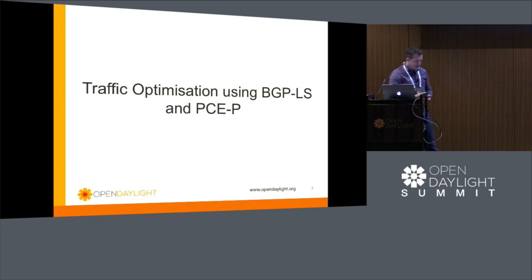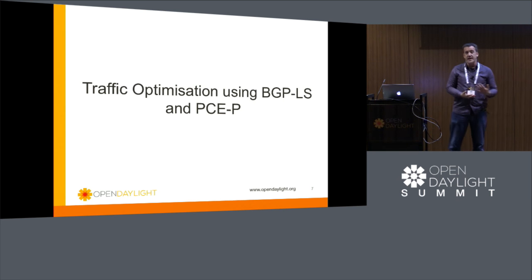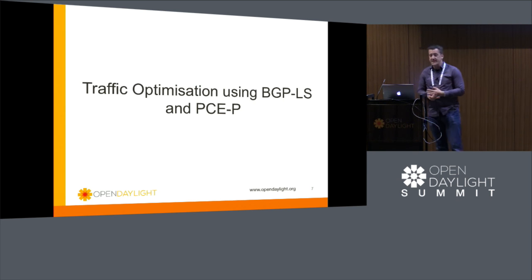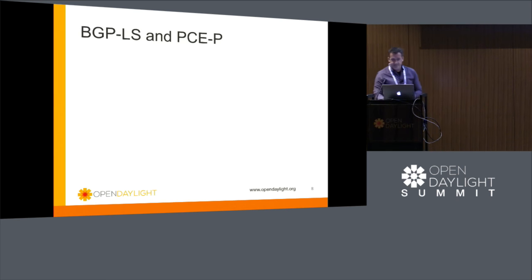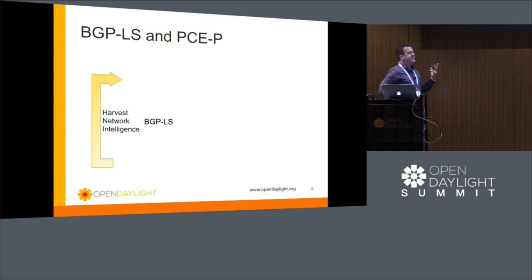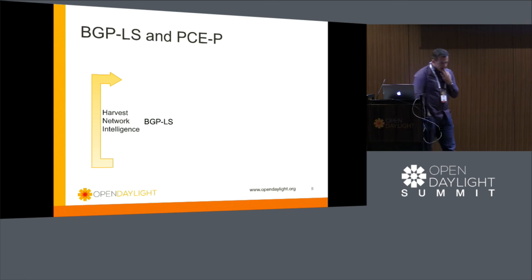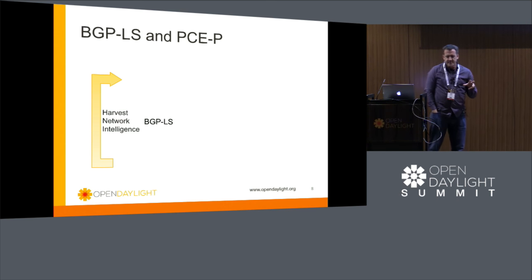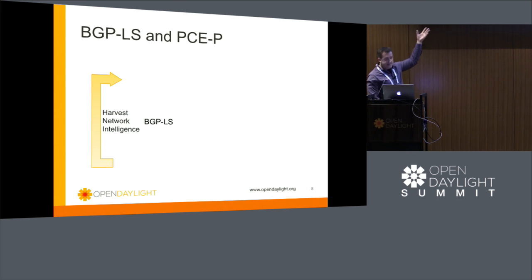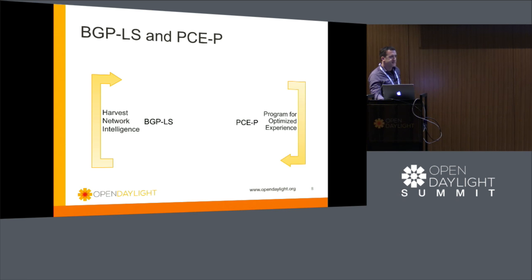The first use case is traffic optimization using BGP-LS and PCEP — this was really where we came from in OpenDaylight with BGP. The generic model for almost any SDN application is: the real value comes when you use more than one southbound plugin — one to learn stuff about the network, a different one to program stuff into the network. In this case, we use BGP-LS to learn and PCEP to program.